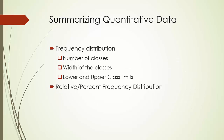Now let's see how we summarize quantitative data. Frequency distribution can also be used for summarizing quantitative data, but we need to be a little careful. In creating a frequency distribution for quantitative data, we usually take the following three steps. First, determine the number of non-overlapping classes. Second, determine the width of each class — it is recommended that the width be the same for each class.